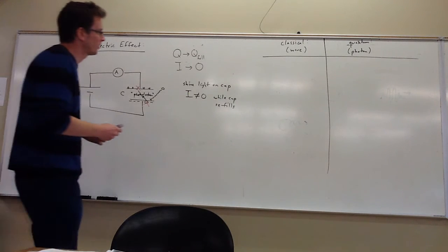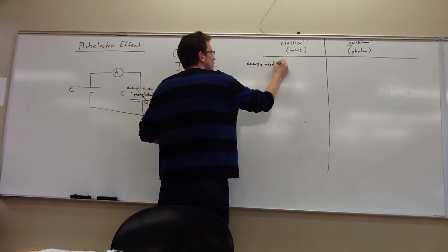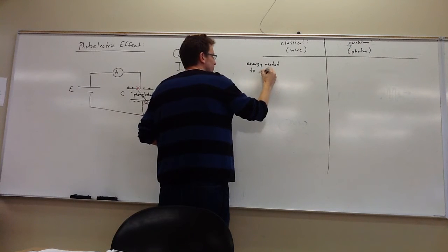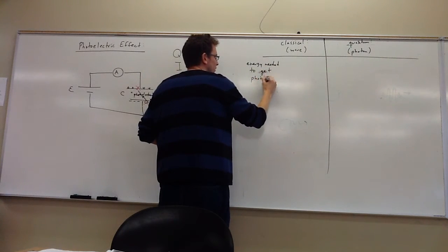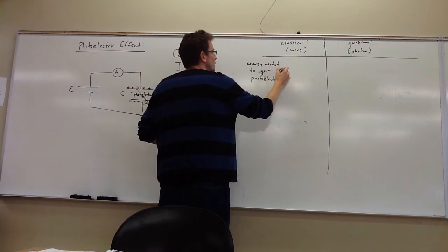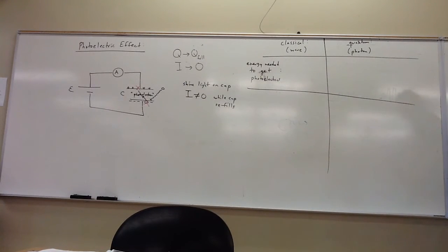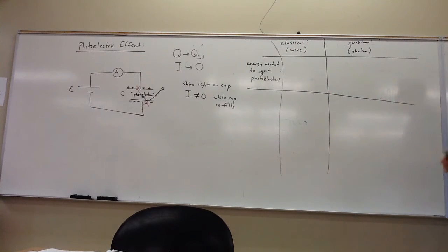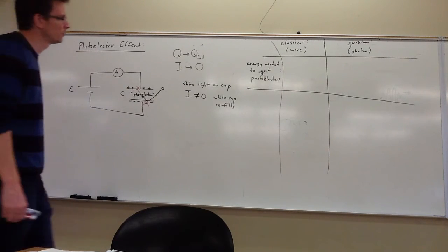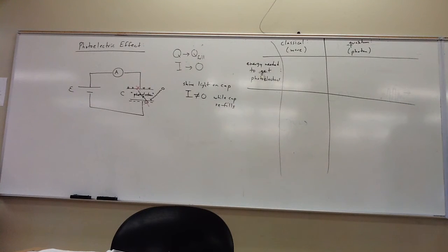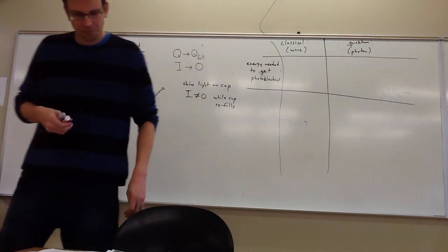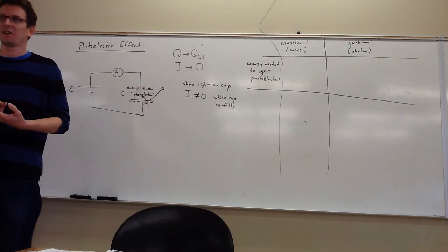Only one of them is borne out by experimental data, so then you can say, I guess quantum physics is real. Let's go through those details. For the classical model — the wave picture — and for the quantum picture — the photon picture — what do they each have to say? The first thing we should address is what is the energy needed to get photoelectrons in the first place. In the wave picture, the energy just continuously keeps coming — there's no granularity to it. You basically have a wave that's imparting more and more energy. So if your wave does not carry that much energy to begin with because it's of low intensity, you're just going to have to wait.